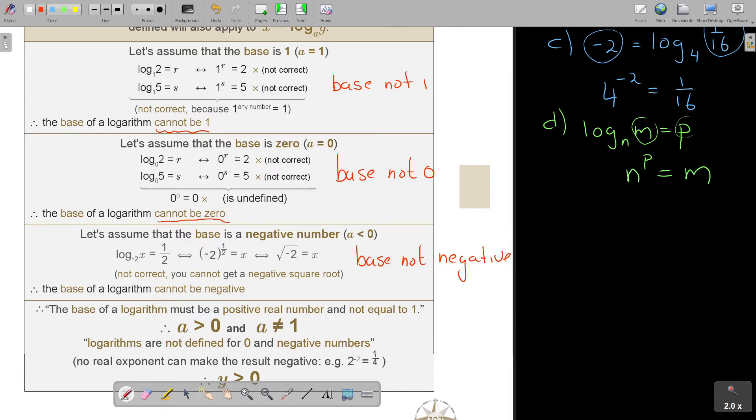So it cannot be 1. It cannot be 0. It cannot be negative. So the base of a logarithm must be a positive real number and not equal to 1. So it must be bigger than 0, bigger than 0, but not 1. Are you aware? Because it can be a fraction. So you can see, it can be a half. So logarithms are not defined for 0 and negative numbers.